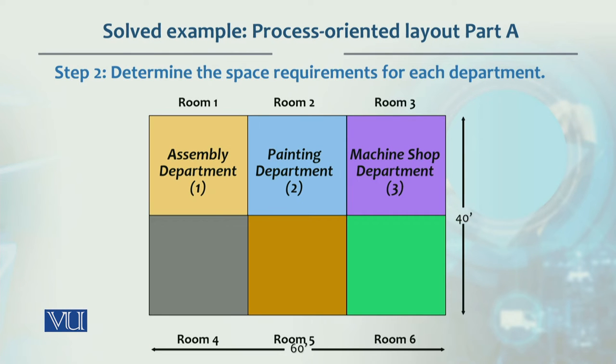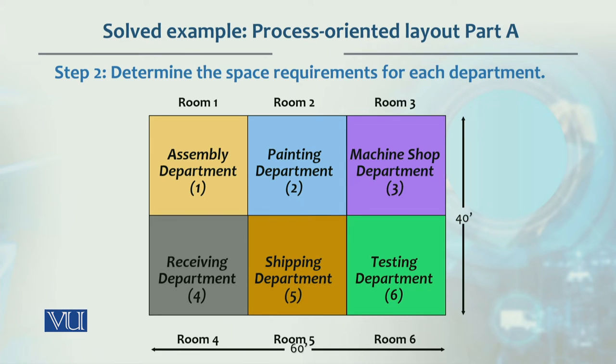Now let's solve this problem. In this case, we have seen the from-to matrix. We will locate departments like this: In room 1, we have the assembly department, which was in the sequence from the list. We placed it in that sequence. In room 2, we have the painting department. In room 3, we have the machine shop department.